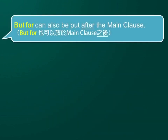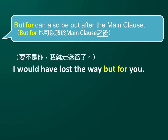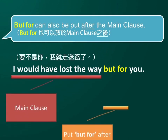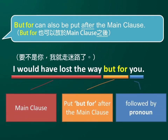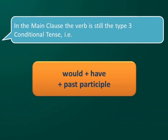'But for' can also be put after the main clause. For example: I would have lost the way but for you. In the main clause, the verb is still the Type 3 conditional tense, that is: would + have + past participle.